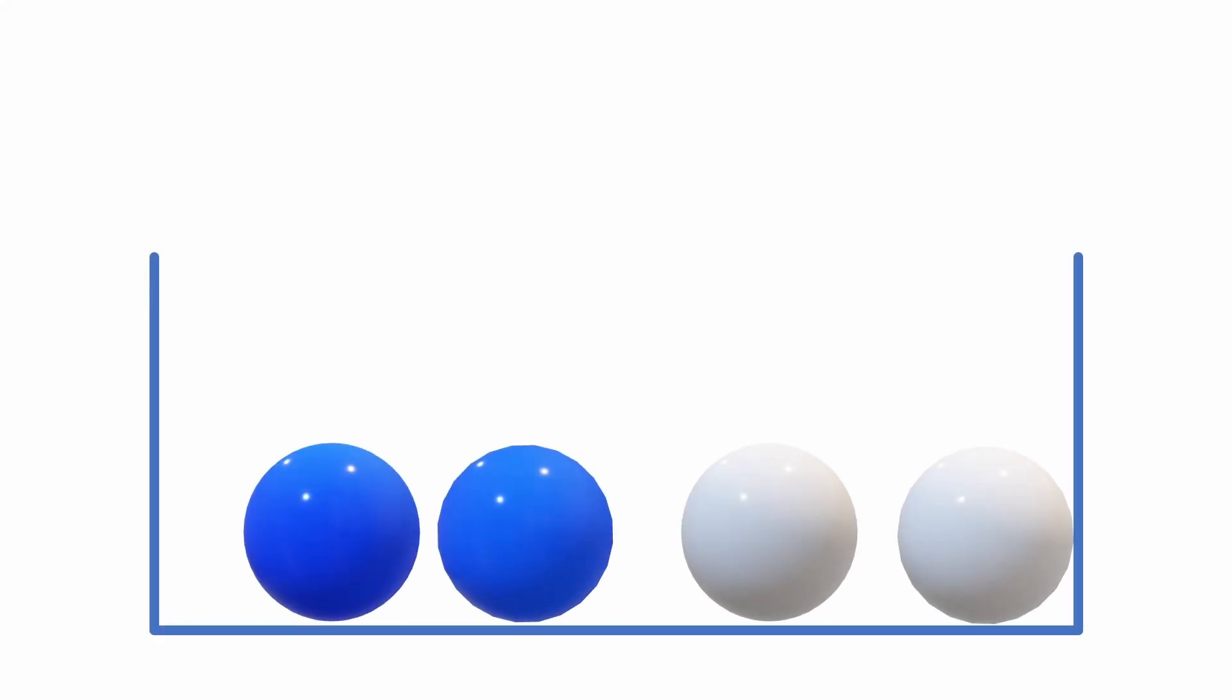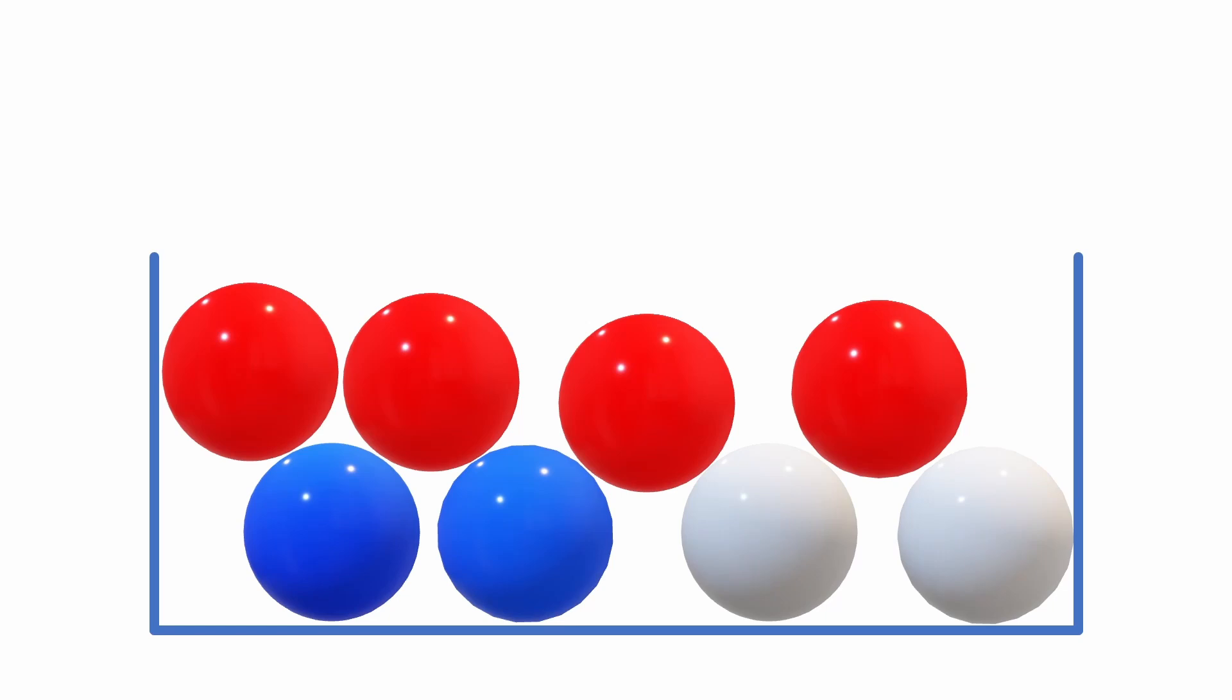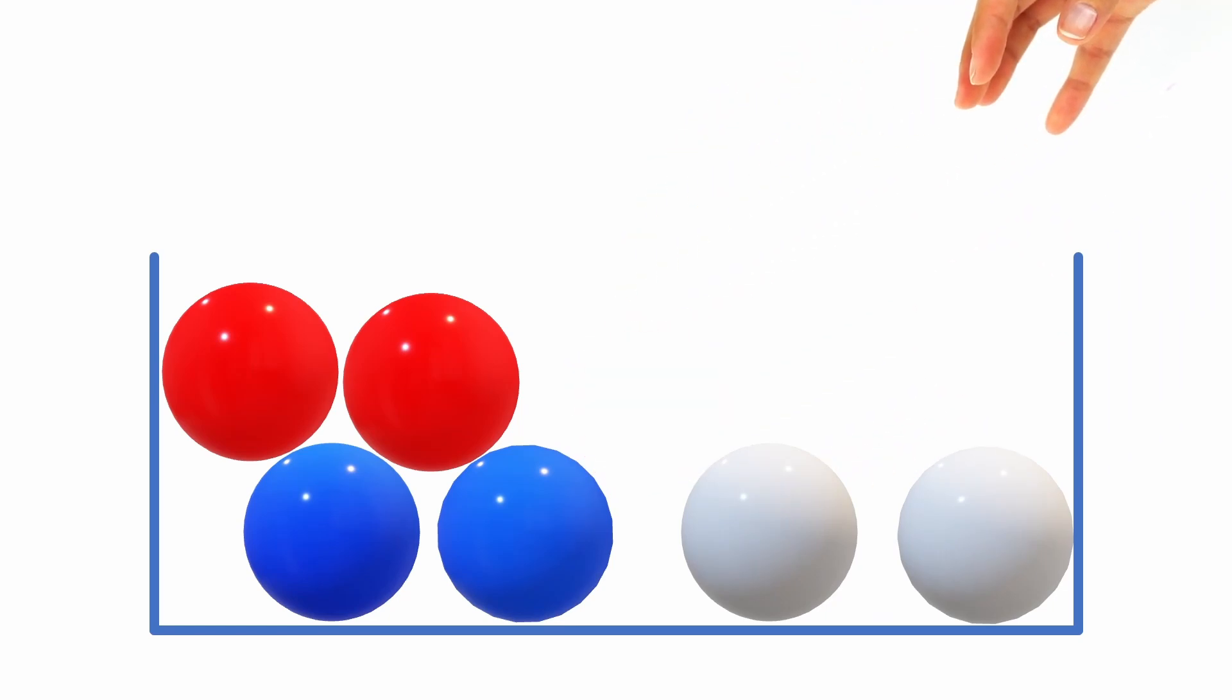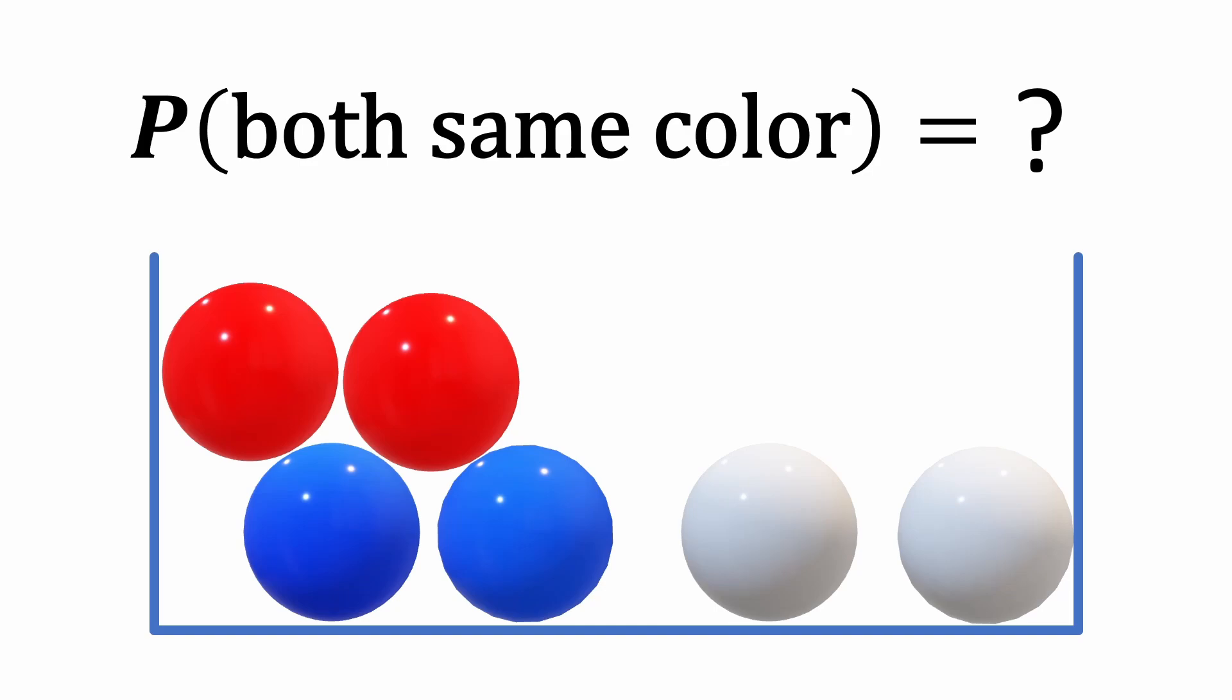Suppose you had a box that had two blue balls, two white balls, and four red balls inside. You're going to randomly pick two balls without replacement. What's the probability that both balls are the same color?